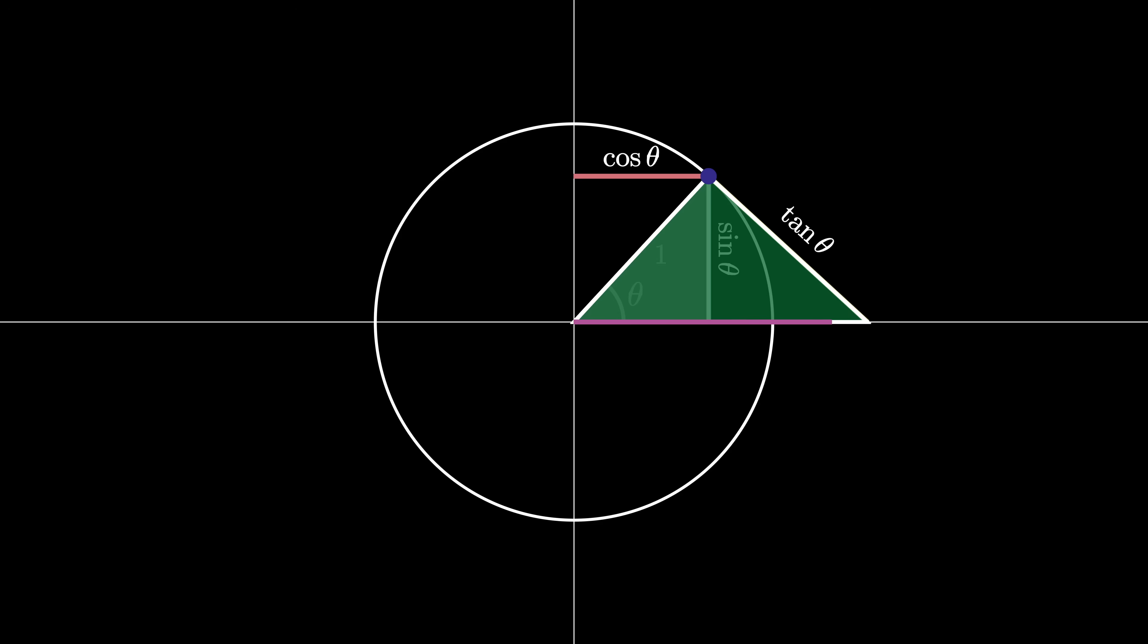We can use the same triangle similarity to compute the length of the hypotenuse of this new triangle to be 1 divided by the cosine of theta, which we then call the secant of theta.